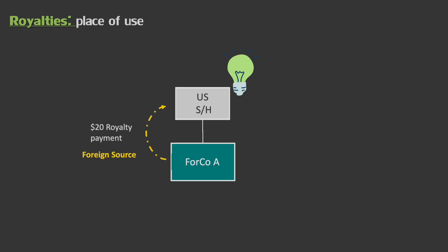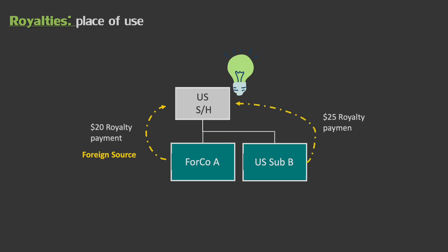Likewise, if the U.S. company has a domestic subsidiary also paying royalties back to the U.S., because the IP is being used in the U.S., then it is considered U.S. source income. The same applies if a royalty is being received from third parties — it does not necessarily need to be an intercompany arrangement for purposes of the sourcing rules.